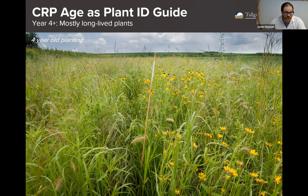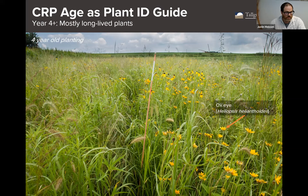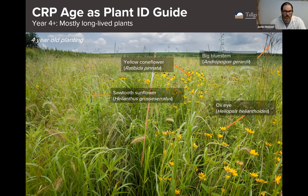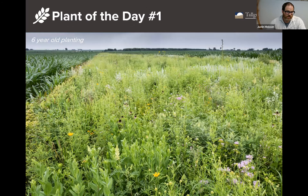This photograph is a four-year-old prairie strip. Key plants we've already seen include oxeye, which sticks around even in mature plantings, and yellow coneflower, which is present throughout the entire prairie strip life cycle. Sawtooth sunflower becomes more common over time due to its rhizomatous nature. And here's big bluestem beginning to be a particularly prominent part of the plant community.